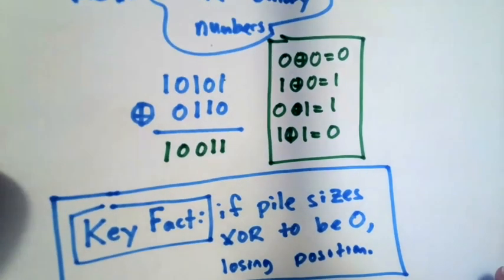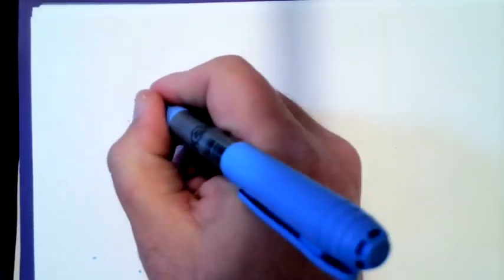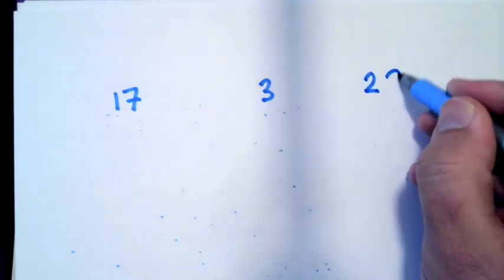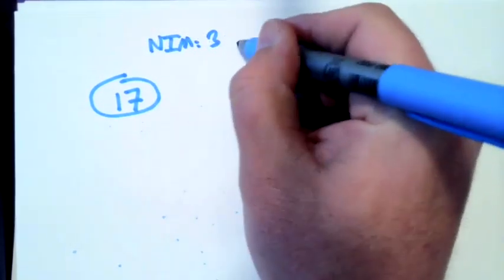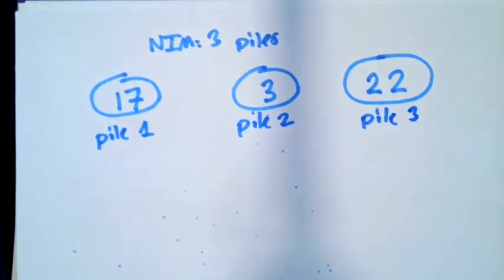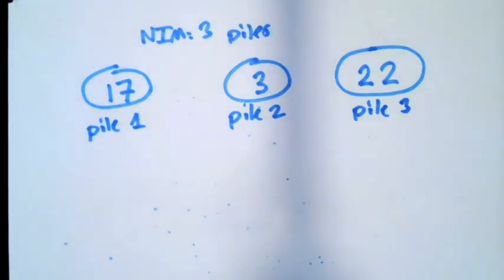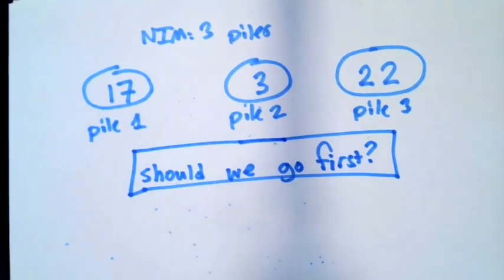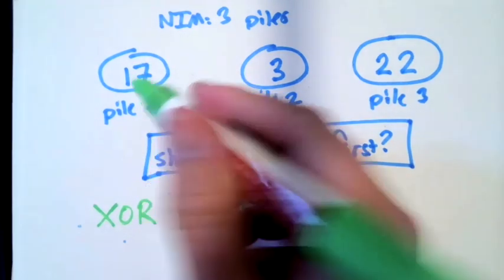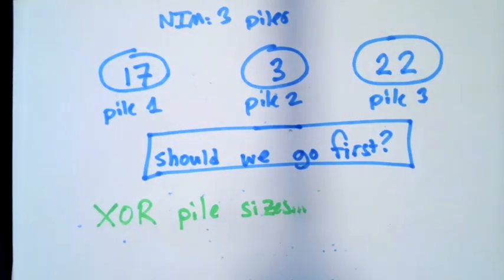Let's look at suppose we have one pile of 17, one pile of three, and one pile of 22. And the question is, do we want to go first or second? If we're starting NIM where we have three piles and these are our pile sizes. To answer that question, what we want to do is XOR the pile sizes together. So first we have to convert these to binary numbers.